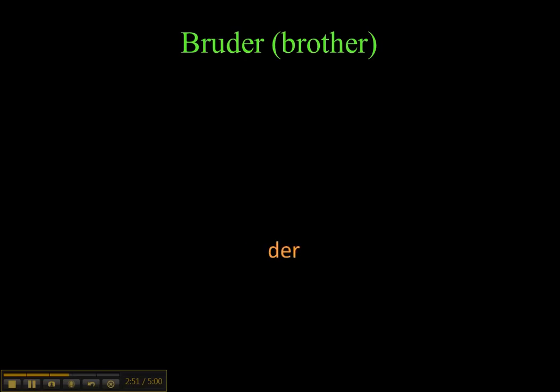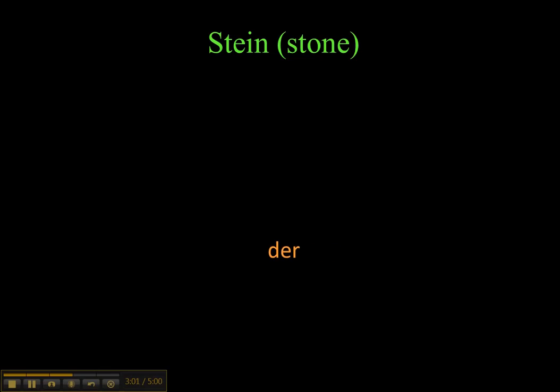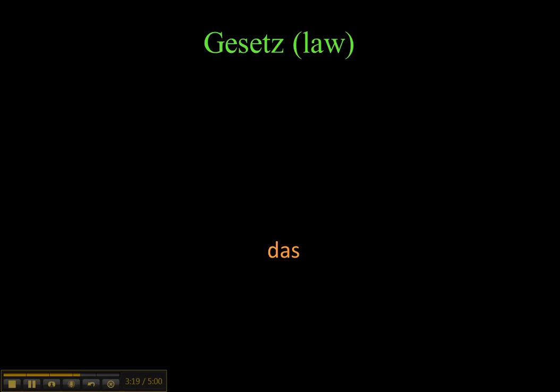'Vater' — of course, this is a male being, so it's der Vater. 'Juli' is a month, and months are masculine. 'Stein' — this is a mineral or a stone, so der Stein. 'Die Ecke' — it's a word that ends in -e, so there's a 90% probability it's 'die'; there are always exceptions, one of the most common being das Auge. 'Gesetz' begins with GE-, and in most cases those will be das words.